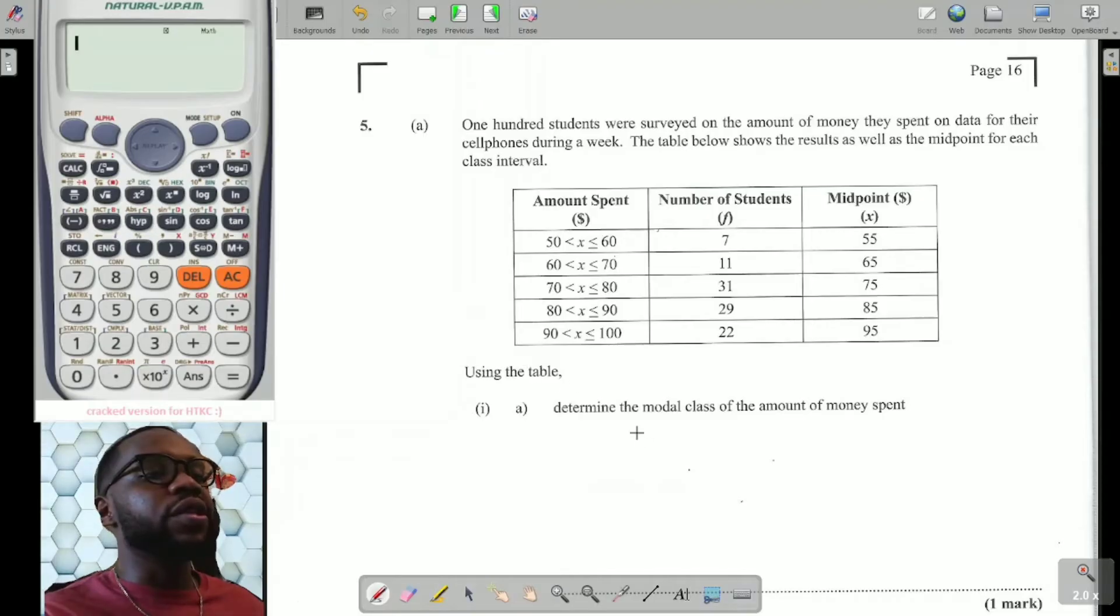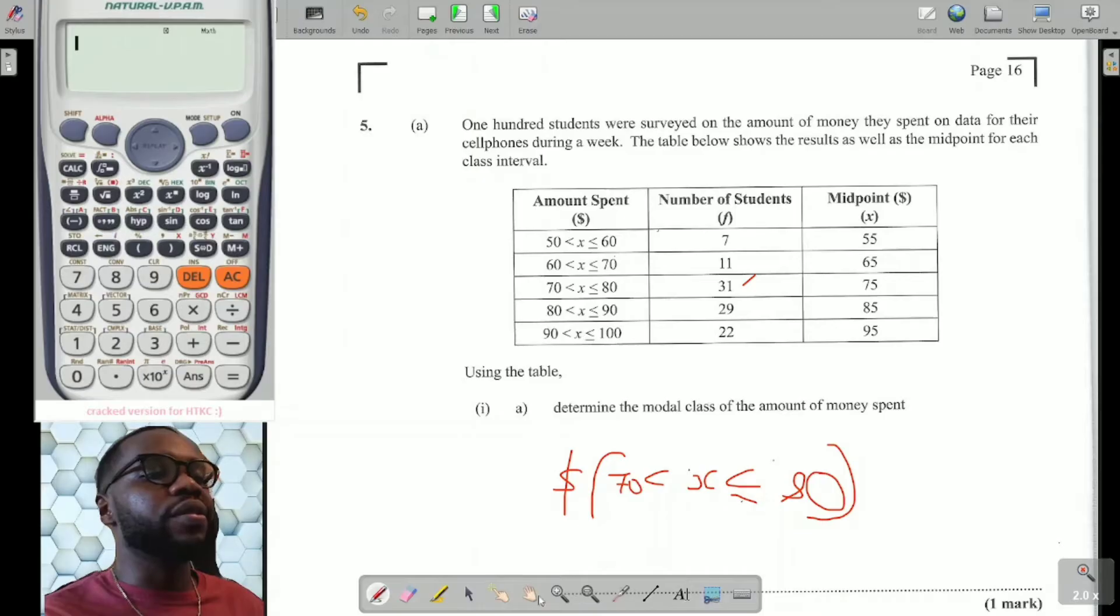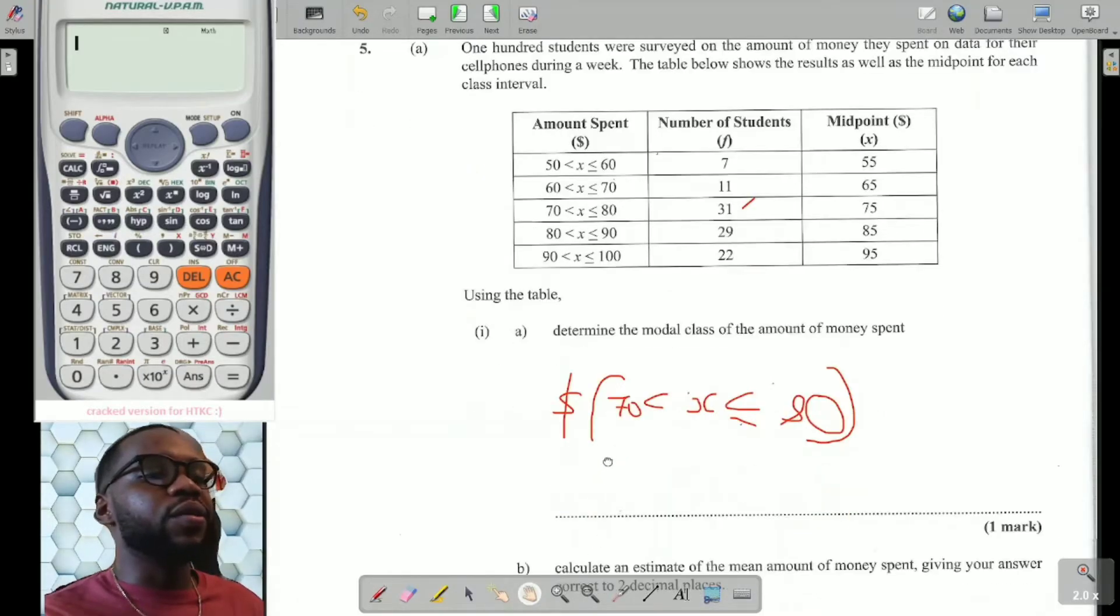It says using the table, determine the modal class of the amount of money spent. Modal class refers to the class that has the highest frequency. So you come to the frequency column, look for the highest frequency. It turns out to be 31, and then you go across to the class, which is 70 to 80. So the modal class would be $70 < x ≤ $80. And that's how you get an easy one mark there.